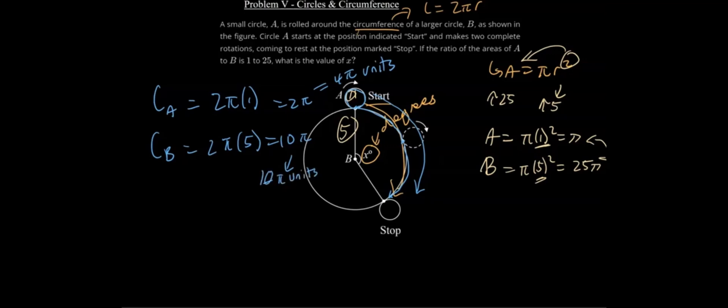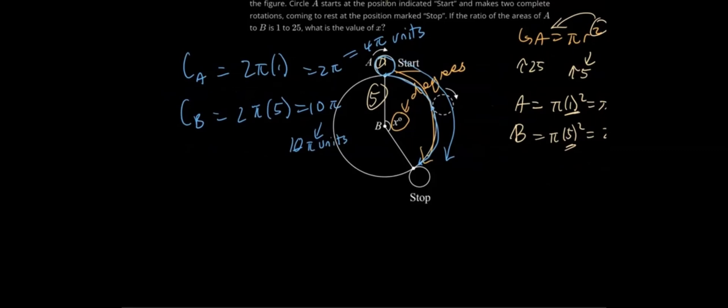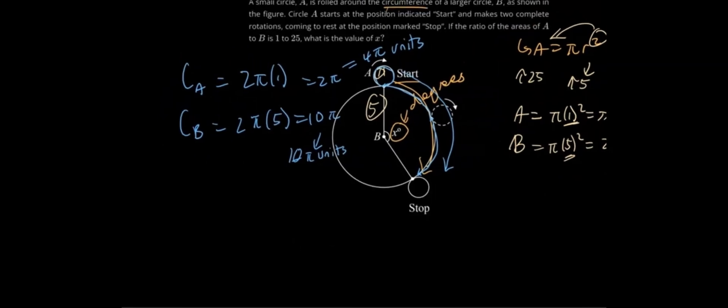It travels 4π units. And the circumference of this is 10π units. We don't need to really continue writing units. We know that the fraction of the circle is 4π over 10π, because this is the total circumference, and this is the amount that we went around the circumference.